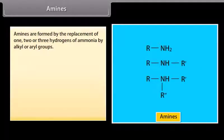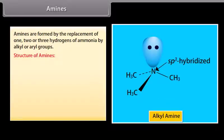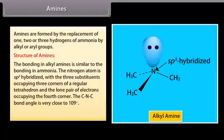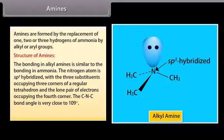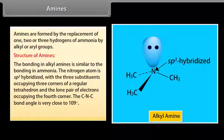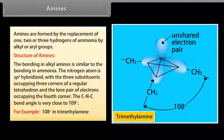Amines are formed by the replacement of 1, 2, or 3 hydrogens of ammonia by alkyl or aryl groups. The bonding in alkyl amines is similar to the bonding in ammonia. The nitrogen atom is sp3 hybridized with the 3 substituents occupying 3 corners of a regular tetrahedron and the lone pair of electrons occupying the 4th corner. The CNC bond angle is very close to 109°, for example 108° in trimethylamine.